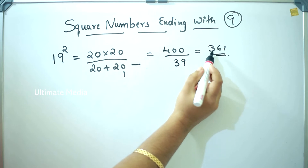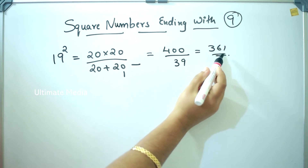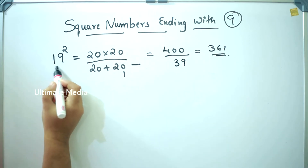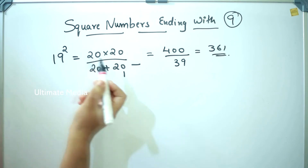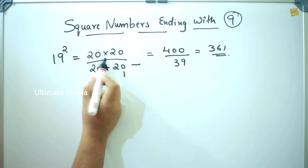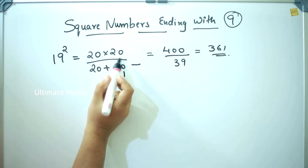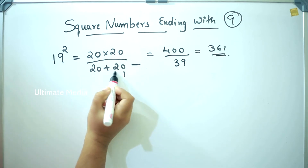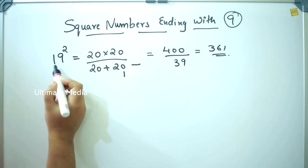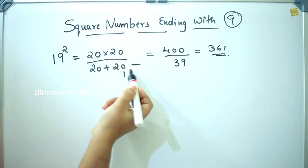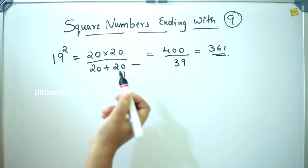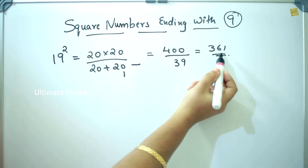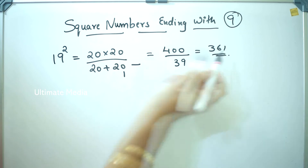19 square. The answer is 361. We convert using the zero formula: 20 into 20, by 20 plus 20, following the calculation pattern. 361.